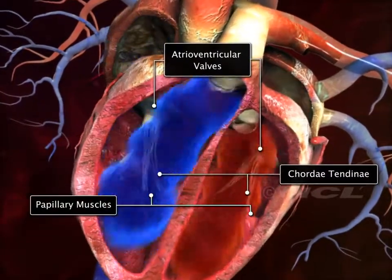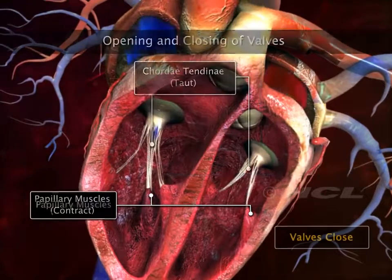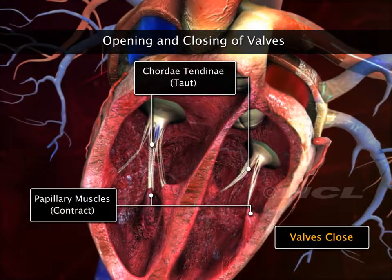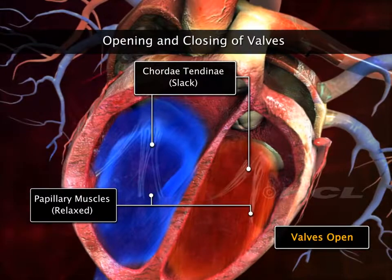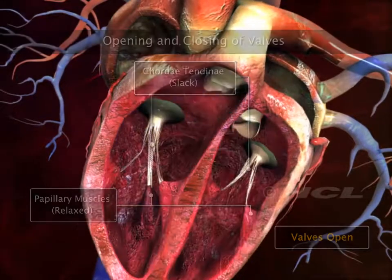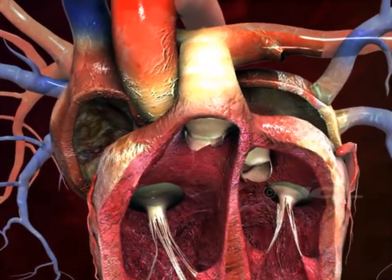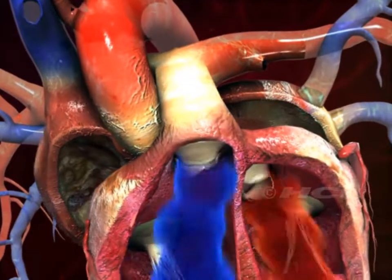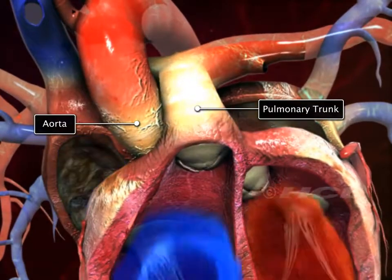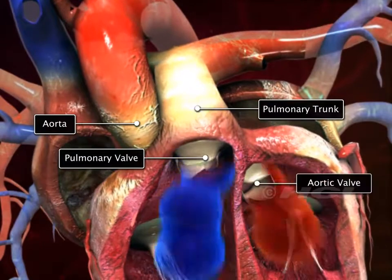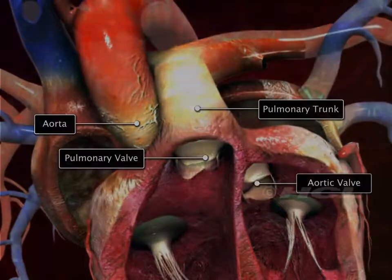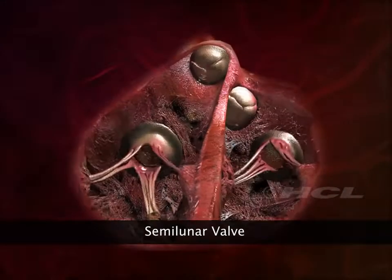Contraction and relaxation of these papillary muscles make the valves open and close. There are also valves at the opening of the pulmonary trunk and the aorta. These are called the pulmonary valve and the aortic valve, respectively.